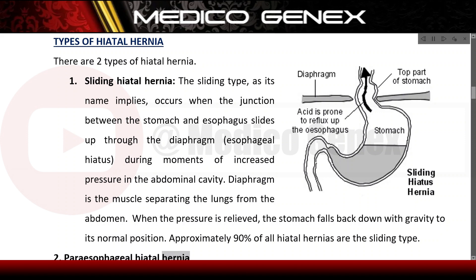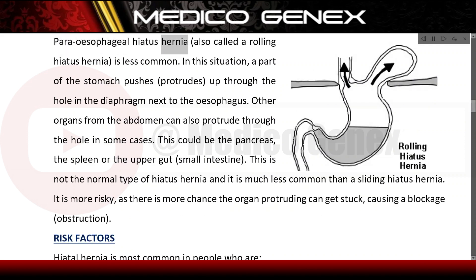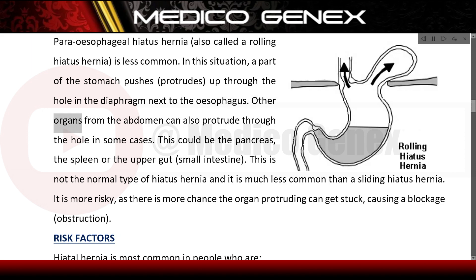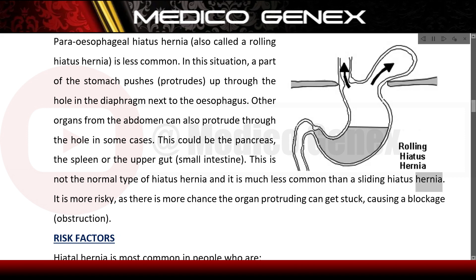Paraesophageal hiatal hernia, also called a rolling hiatus hernia, is less common. In this situation, a part of the stomach protrudes up through the hole in the diaphragm next to the esophagus. Other organs from the abdomen — such as the pancreas, spleen, or upper gut (small intestine) — can also protrude through the hole in some cases. This is not the normal type of hiatus hernia and it is much less common than a sliding hiatus hernia.